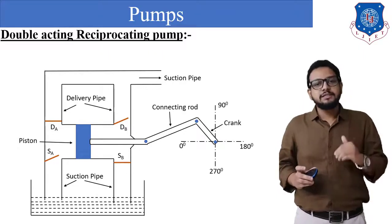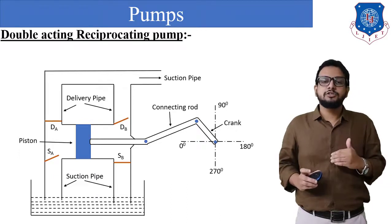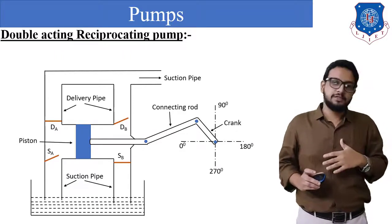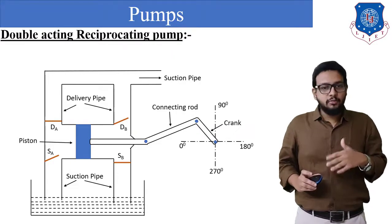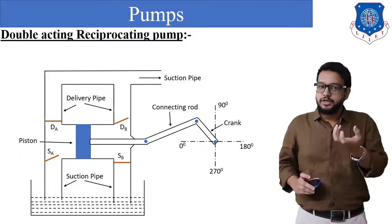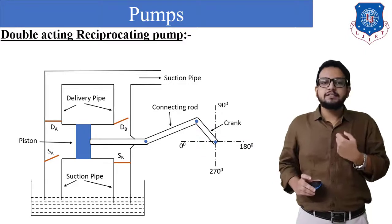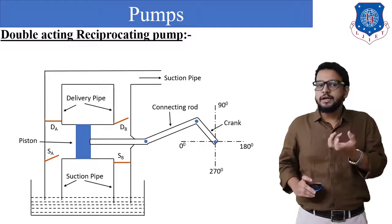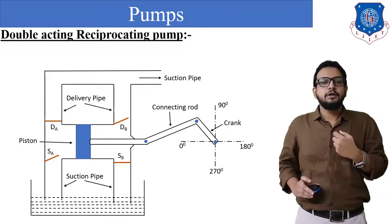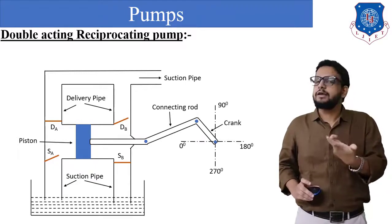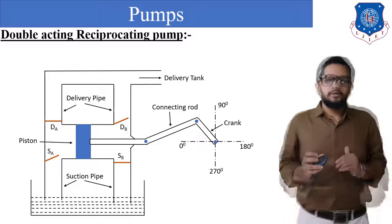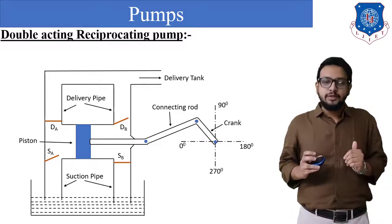In this case we can obtain a continuous discharge of liquid from both sides — from the left side of the piston as well as from the right side. On the bottom side you can see a chamber filled with water called a sump. The pipe inserted is the suction pipe. There are two valves — valve Sa and valve Sb — both are suction valves of the non-return type. On the top side there are two delivery pipes with delivery valves, valve Da and valve Db, connected directly to the delivery tank.